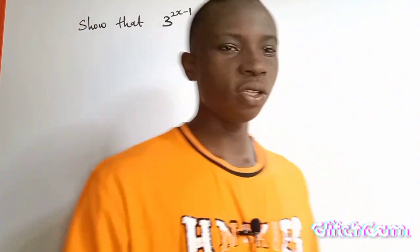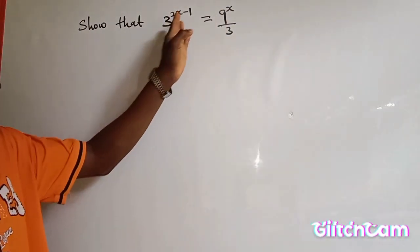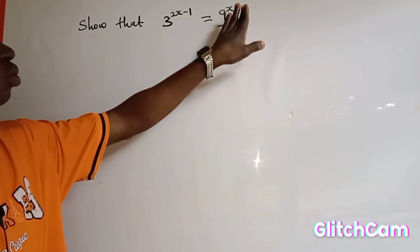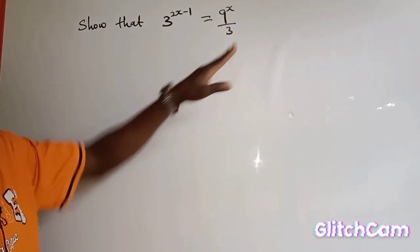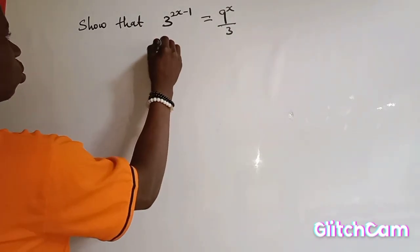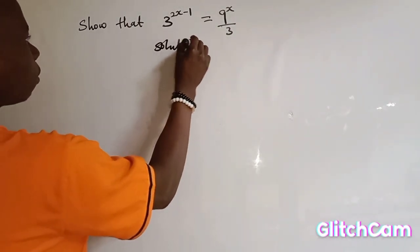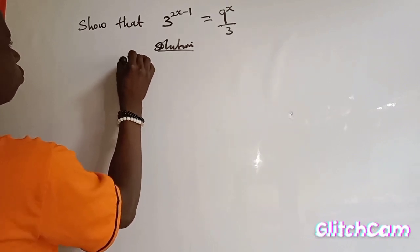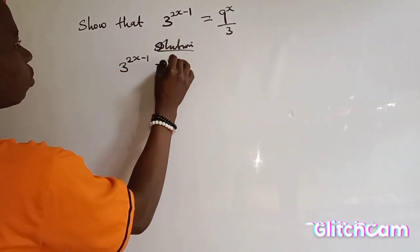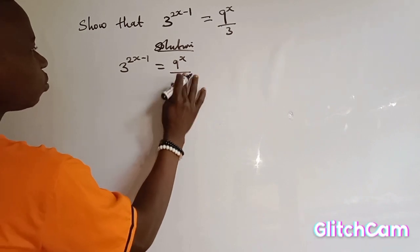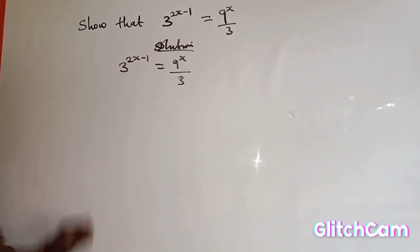So the equation on the board says we should show that 3 to the power of 2s minus 1 is equal to 9s over 3. We are asked to prove that this is equal to this. We are asked to show that 3 to the power of 2s minus 1 is equal to 9 to the power of s over 3. Solution.